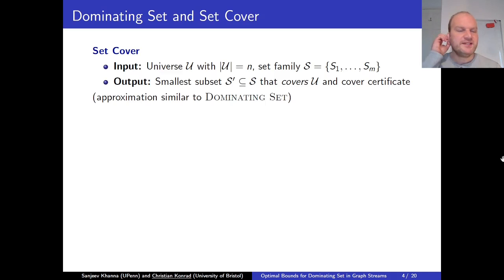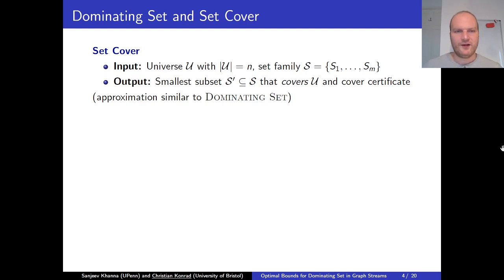Let's start by pointing out the connection between dominating set and set cover. In set cover we have an input universe U of size n, and we have a family of m sets, all subsets of U. The output should be the smallest possible subset of this family whose union covers the entire universe U.